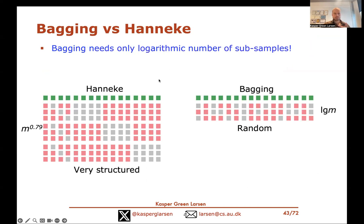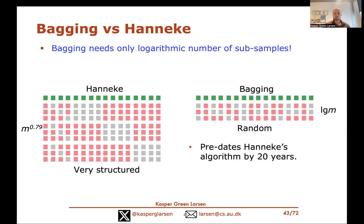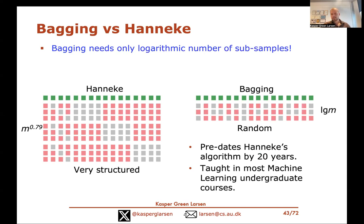Comparing the two: bagging needs only a logarithmic number of subsamples, not m^0.79, and they're just random subsamples drawn independently with replacement. A really surprising fact is that bagging was known for more than 20 years before Hanneke's algorithm — it's taught in most undergraduate machine learning courses — yet this optimal PAC learning property was not known. Even though the algorithm predated Hanneke, the analysis uses Hanneke's ideas, so it wouldn't have been possible to prove this without his algorithm first.